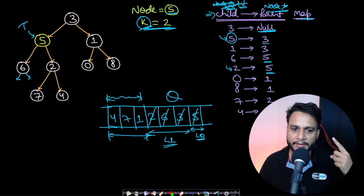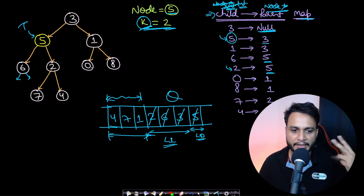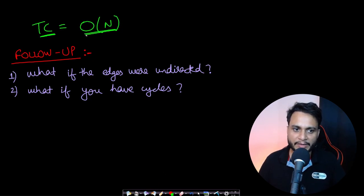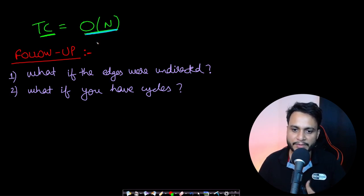This entire process involved: first, creating a child-to-parent map; second, recognizing it as a BFS problem; and third, applying BFS. The time complexity is O(N) since we process each node only once using the visited array.